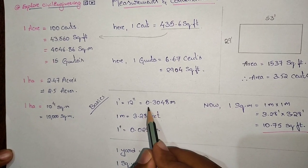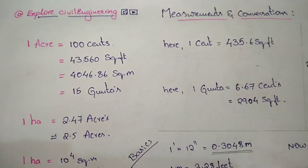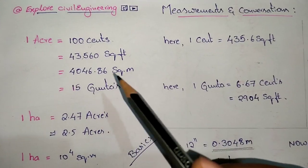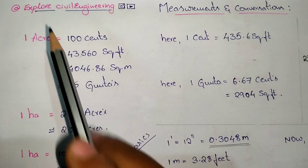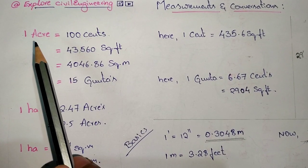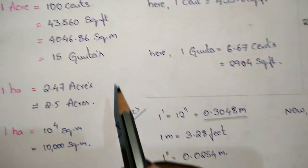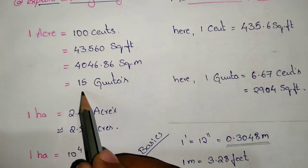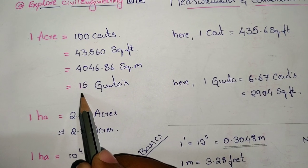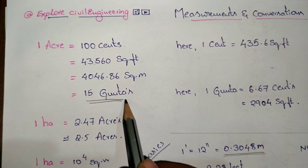We know one foot equals 12 inches, which equals 0.3048 meters. Now, one acre equals 15 gundas. Gunda is a unit of measurement of land area.